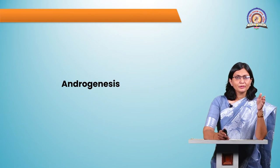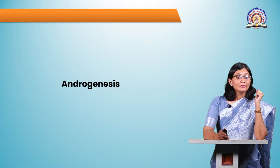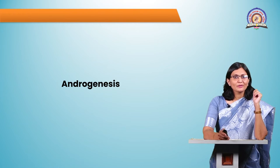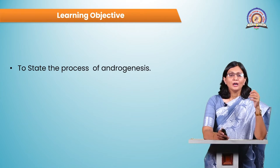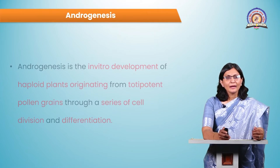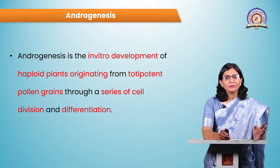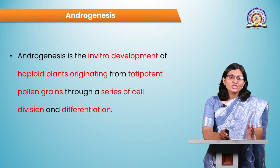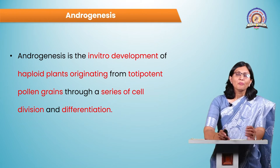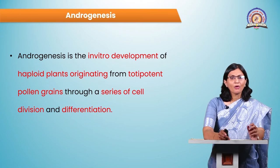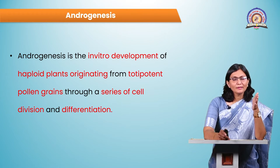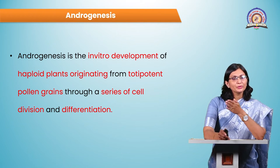After performing anther and pollen culture, we obtain haploid plants. This process of development of haploid plants is called androgenesis. Androgenesis is the in vitro development of haploid plants originated from totipotent pollen grains through a series of cell divisions and differentiation. When using anther culture, the anther is squeezed, pollen is released, and this pollen regenerates into entire haploid plants.